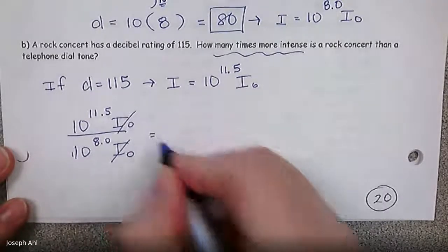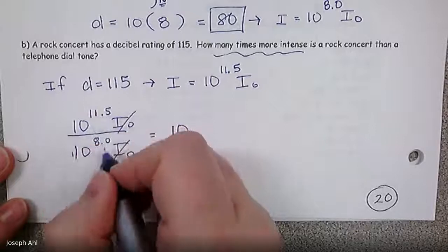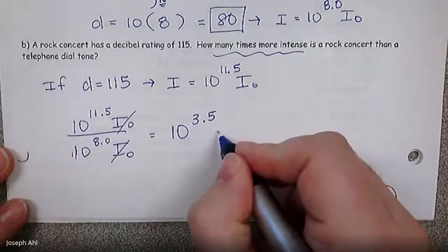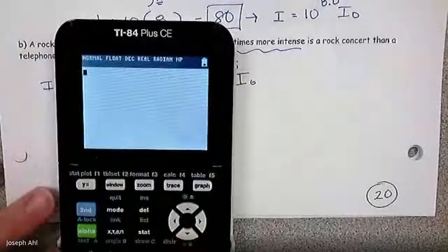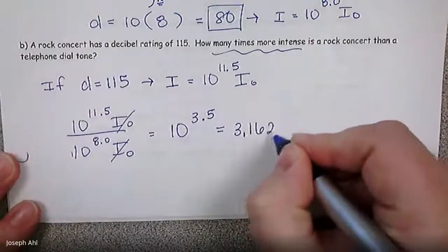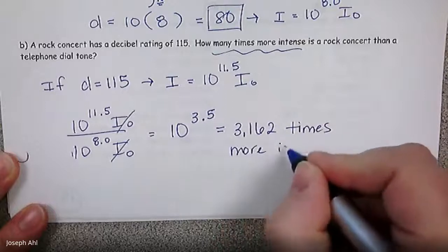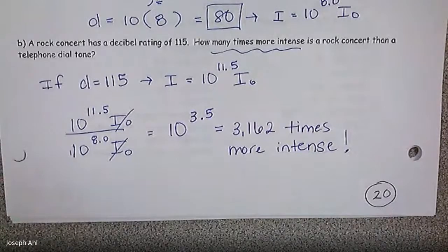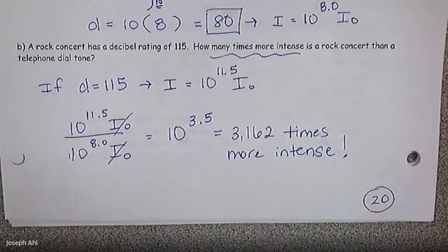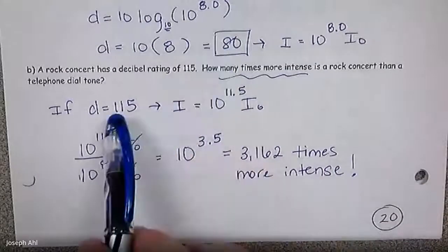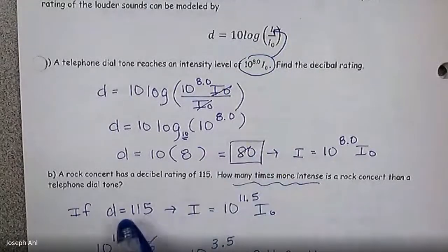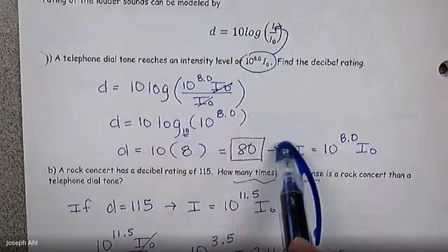Here this corresponded with an intensity that was 10 to the 8.0 I sub 0. So can we translate that to an intensity level for the decibel level of 115? Hopefully it makes sense that if 10 to the 8th corresponded with 80, then we could do 10 to the 11.5 I sub 0. So if I divide these 10 to the 11.5 I sub 0 over 10 to the 8.0 I sub 0. The I sub 0's cancel. And when you divide two things at the same base, we keep that base and then subtract the exponents. So 11.5 minus 8 would be 3.5. So the rock concert is 10 to the 3.5 times more intense, which is 3,162 times more intense.